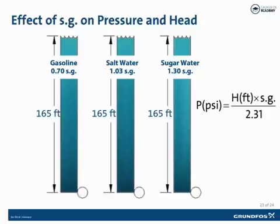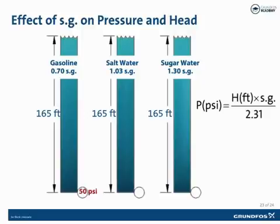Now let's look at what effect the specific gravity of a fluid has on pressure head. If we had a column of gasoline with a specific gravity of 0.7 that was 165 feet tall, the pressure gauge at the bottom would read 165 times 0.7 divided by 2.31, giving us 50 PSI. A column of salt water with a specific gravity of 1.03 at 165 feet tall would read 165 times 1.03 divided by 2.31, giving us 74 PSI. A column of sugar water with a specific gravity of 1.30 at 165 feet tall would read 165 times 1.30 divided by 2.31, giving us 93 PSI. Fluids with a higher or lower specific gravity than water can cause changes in how a pump operates.